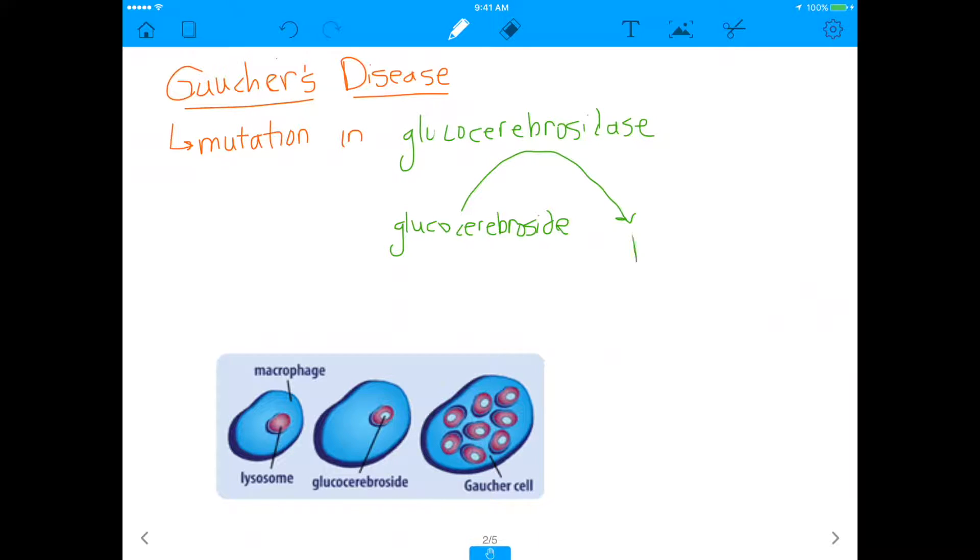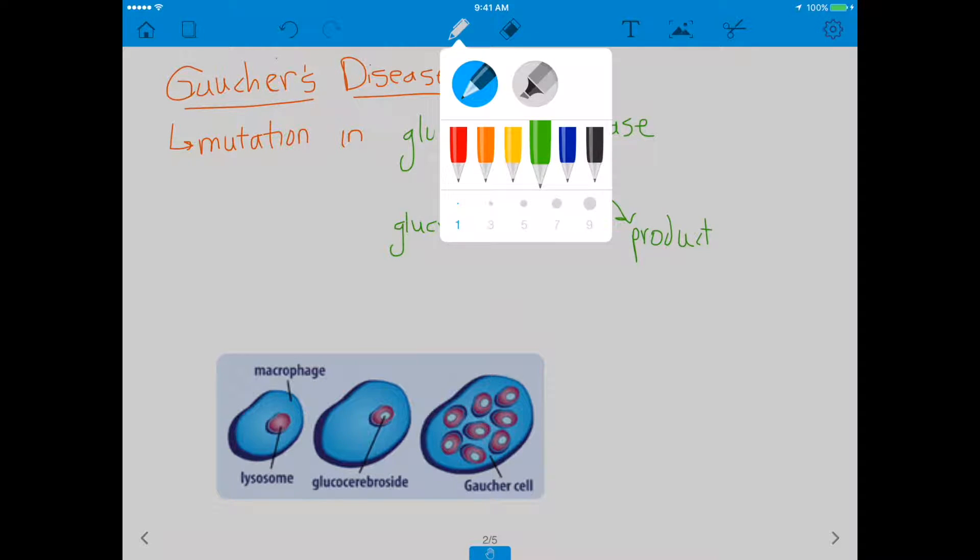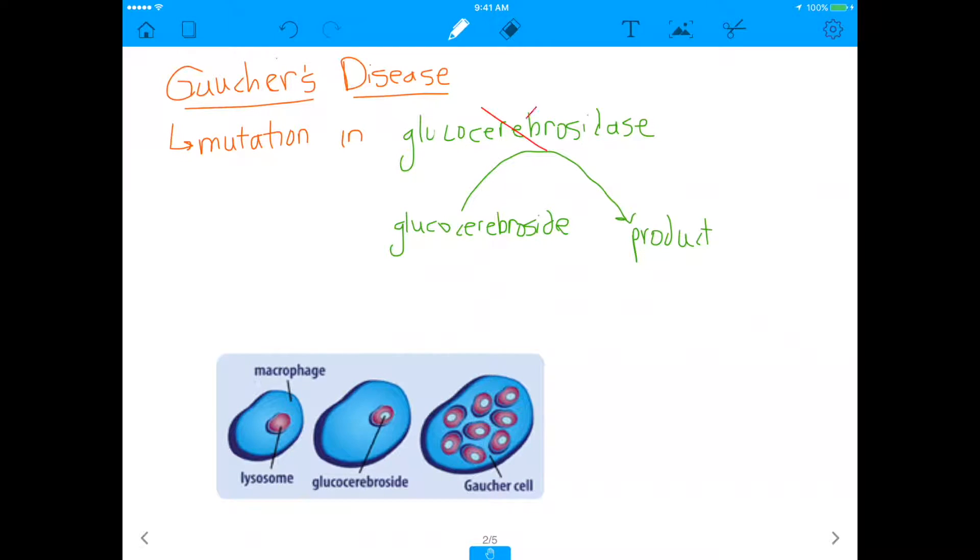If the enzyme was working properly, what it actually does is the enzyme takes this thing called glucocerebroside and it converts it into a product. But let's say we have a mutation in this enzyme. Then what happens is there will be no product formed because the enzyme is not working properly. And then ultimately what will happen is that this glucocerebroside will be produced at very large amounts. Like the enzyme doesn't use it up, so glucocerebroside builds up. And that's where you end up getting the disease.